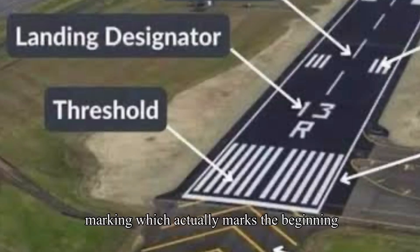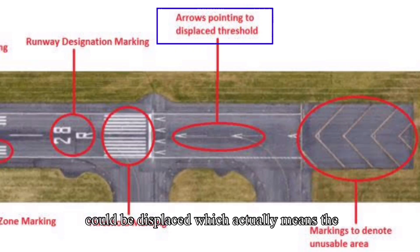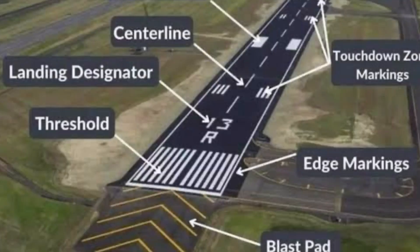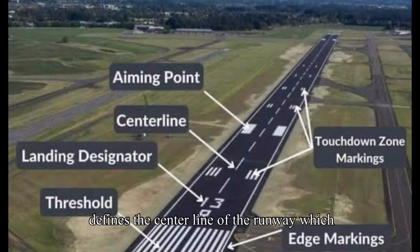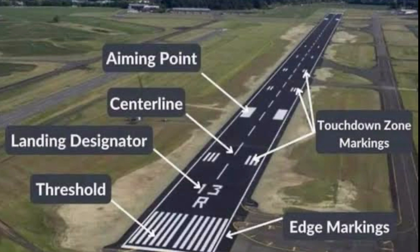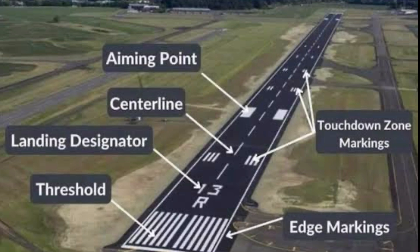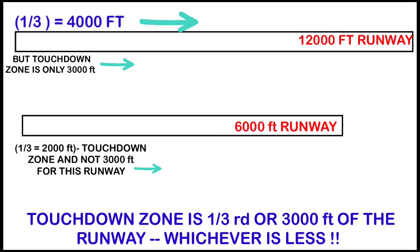The runway threshold marking marks the beginning of the runway. In certain cases these threshold markings could be displaced, meaning the part of the runway behind these markings is unusable for landing but could be used for takeoff. The edge marking defines the lateral confines of the runway, and the centerline marking defines the centerline, which becomes quite significant during night operations. The aiming point markers are where the pilot is supposed to touch down, located 1000 feet from the runway threshold, with subsequent markers at 500-foot intervals defining the touchdown zone.